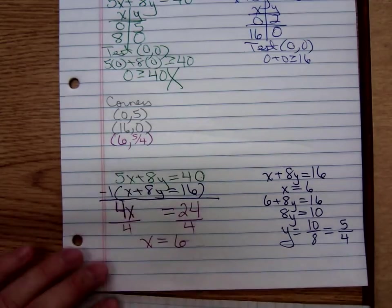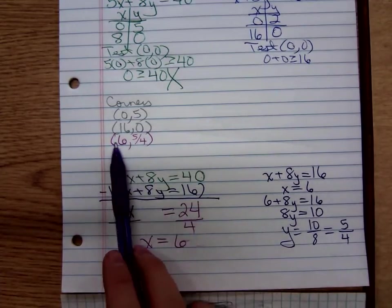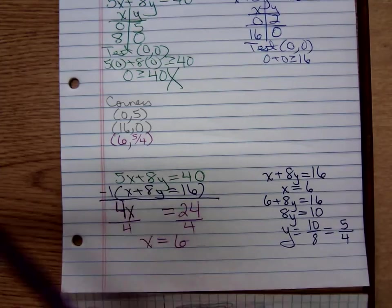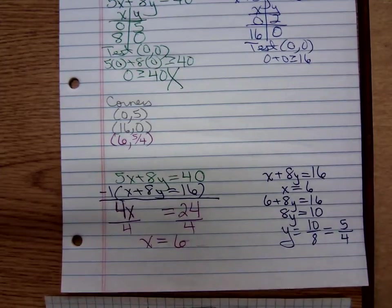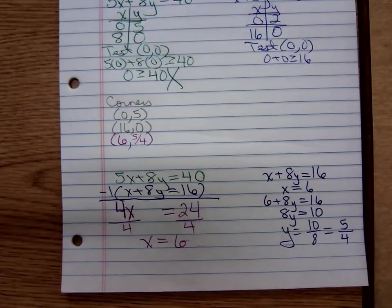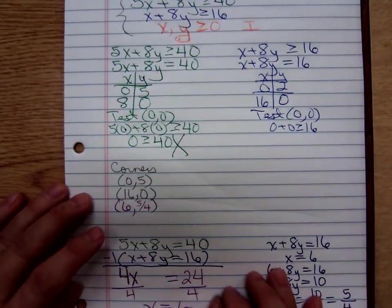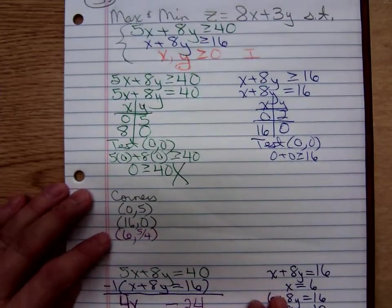I hope something occurs at the 6, 5 fourths. Otherwise, we went through all that effort for no purpose. What's the function we're trying to maximize and minimize? Where's that objective function? There it is.